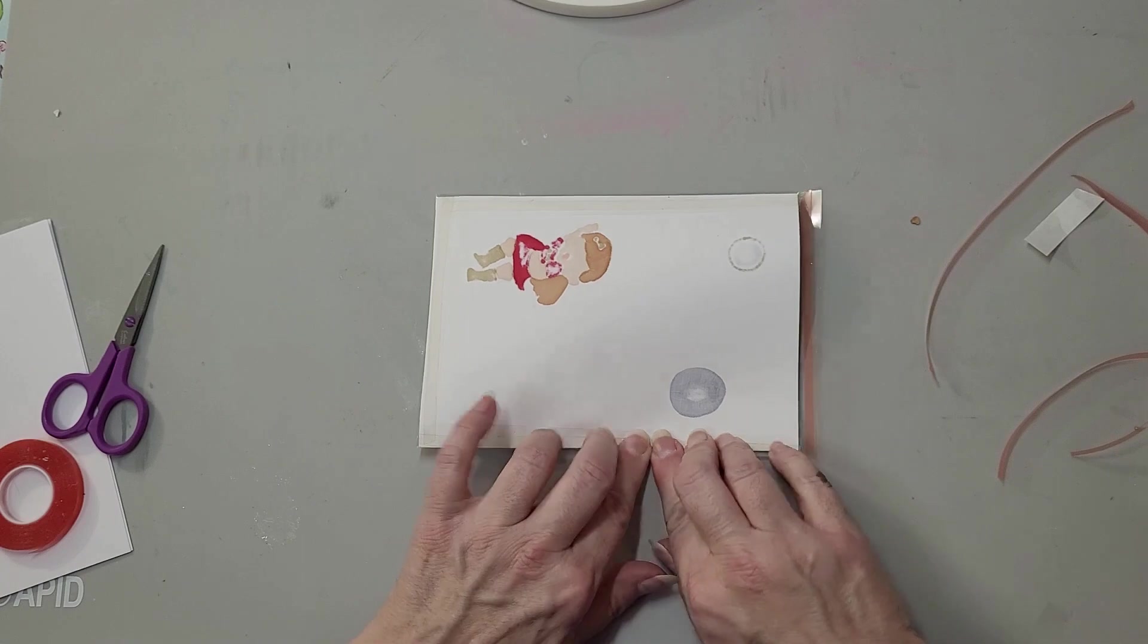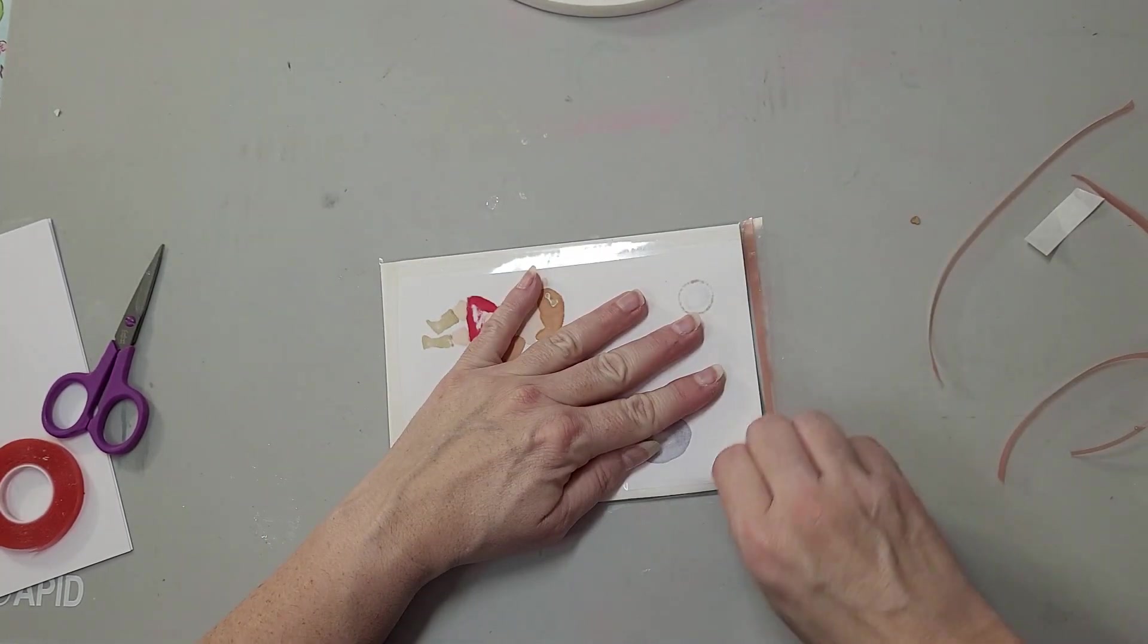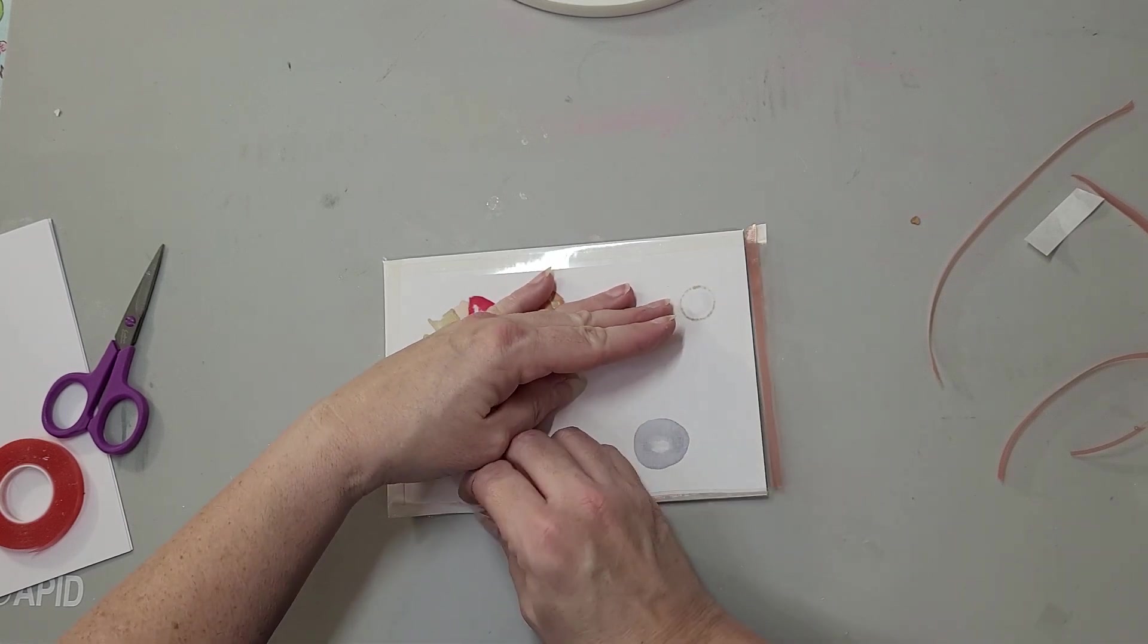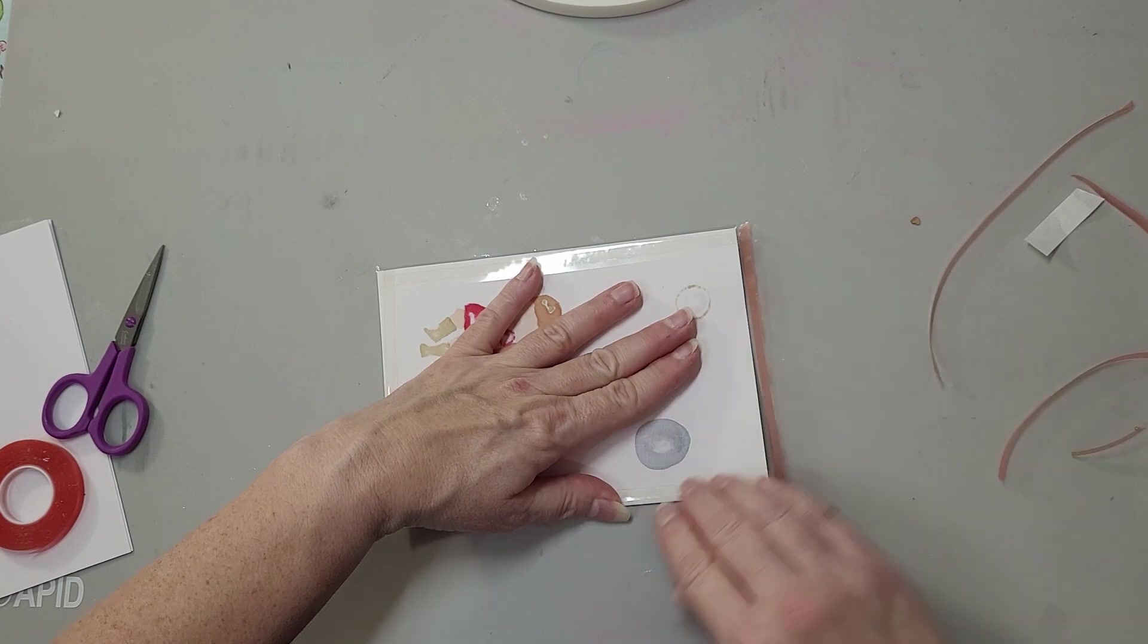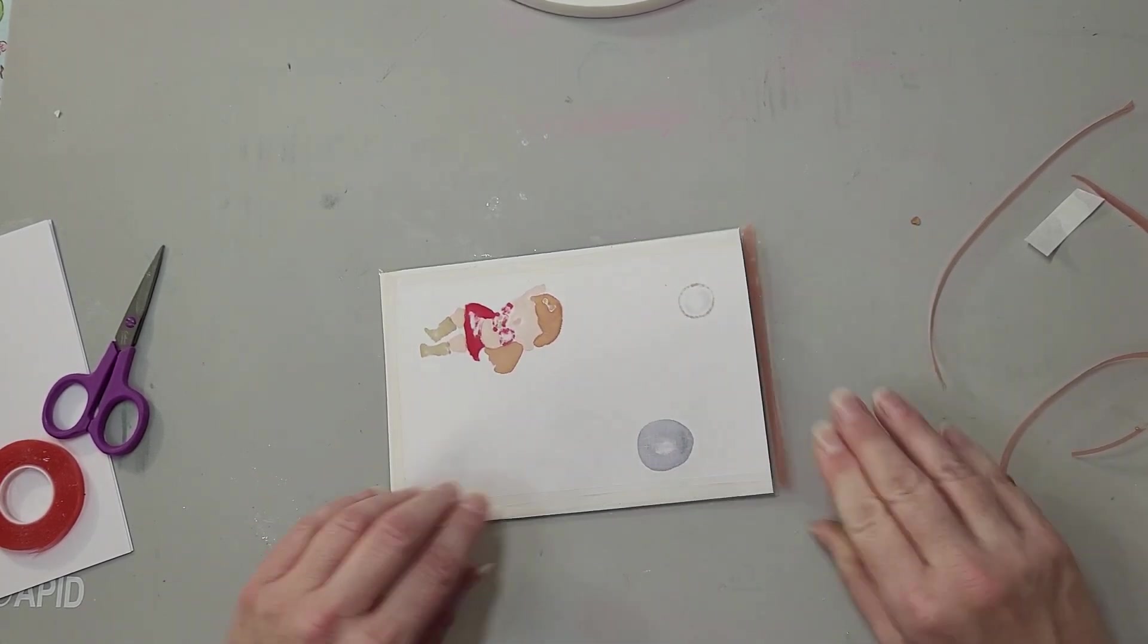Alright, now we'll push this down into place. I just wrinkled that. There we go. I wrinkled that terribly. Alright, let's pull this off. This is why I like using regular glue.